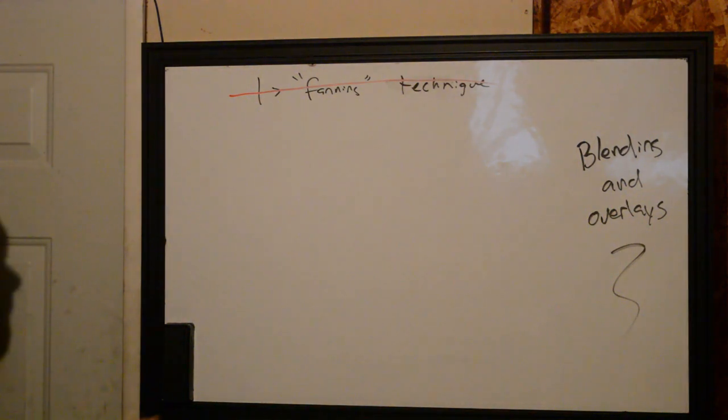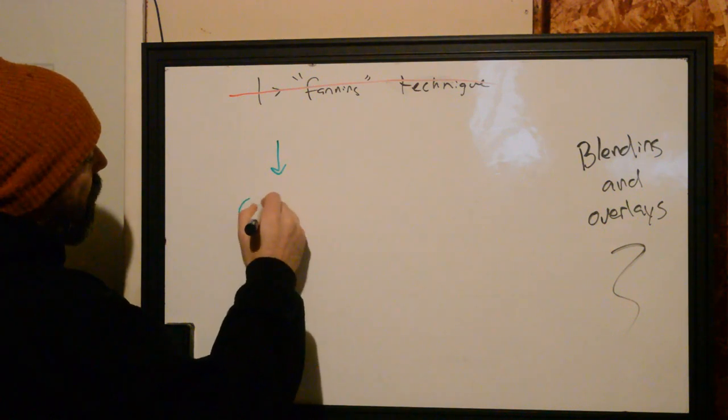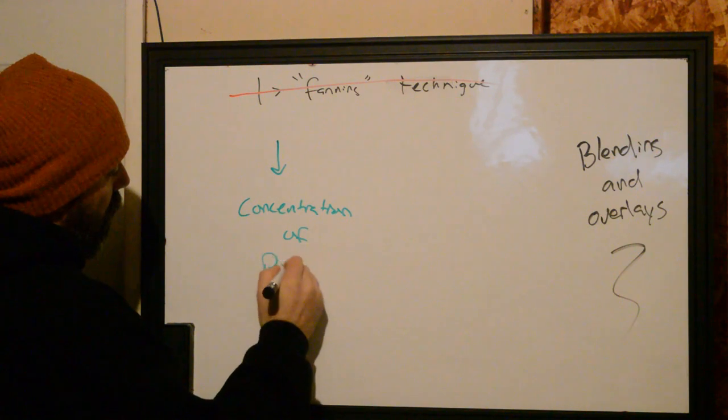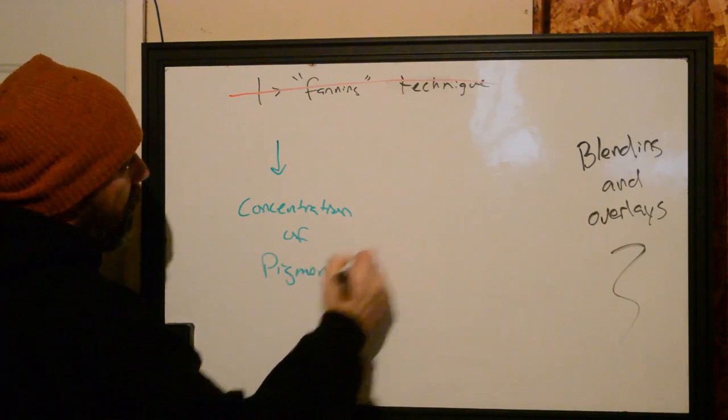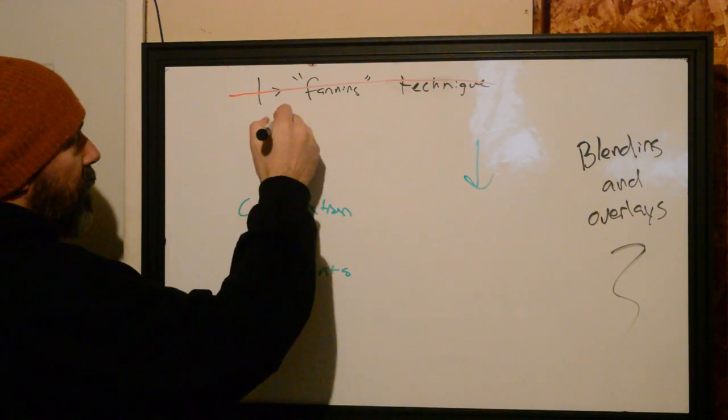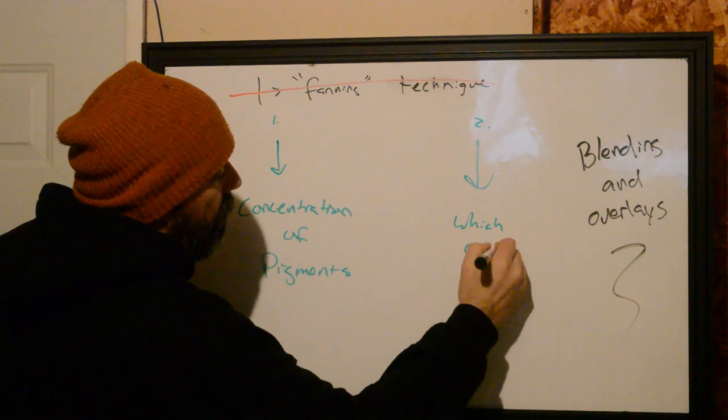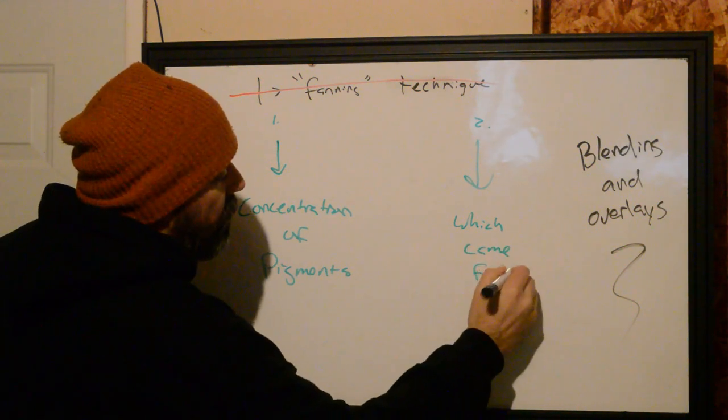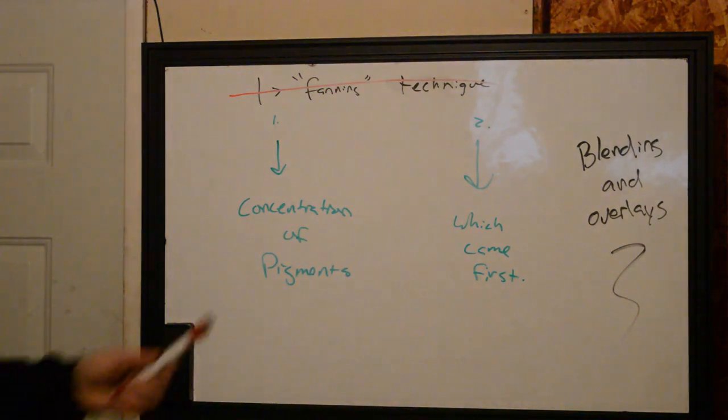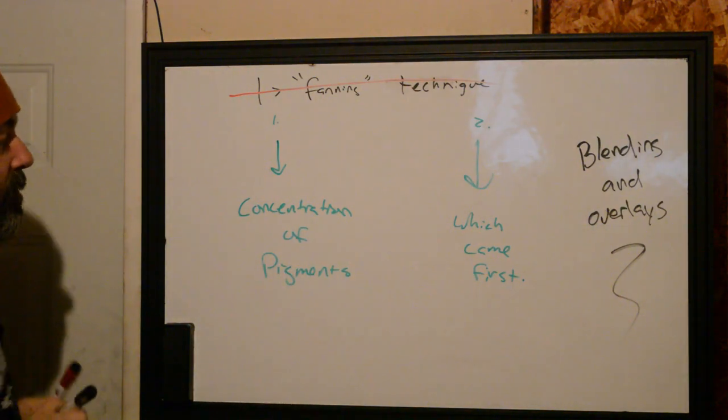When we're talking about blending and overlays, there are two things we need to think about. The first is concentration of pigments, and the second is which came first.